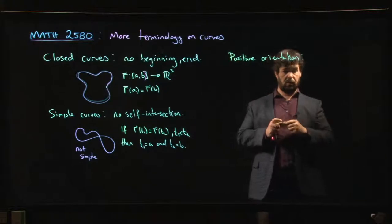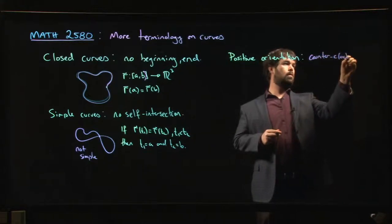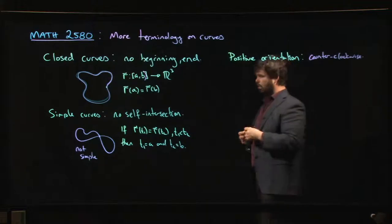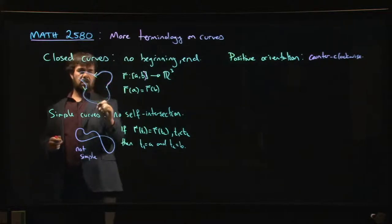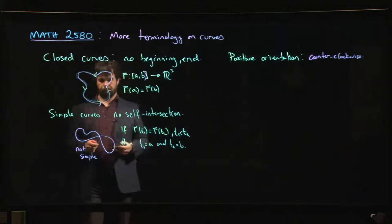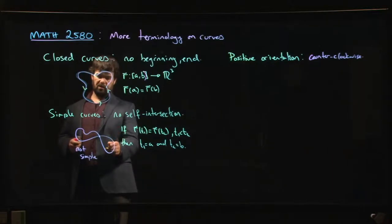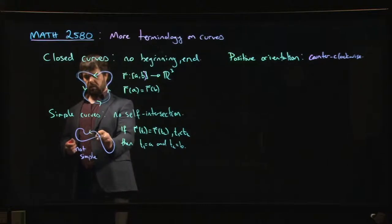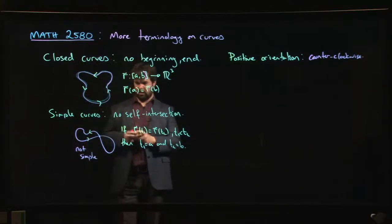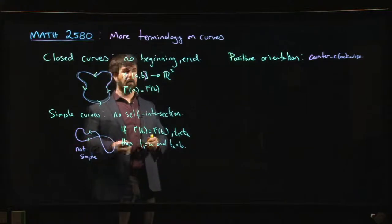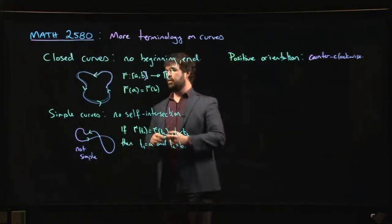The positive orientation is basically the counterclockwise orientation. So positively oriented means counterclockwise — if you think in terms of a circle, you'd be going around in that direction. It's a little bit trickier when you have a non-simple curve; it's harder to say what the positive orientation is, though you can still work it out.